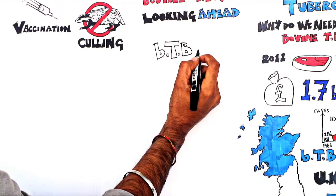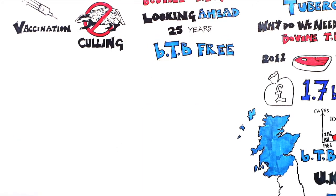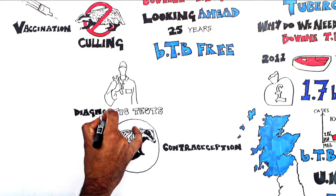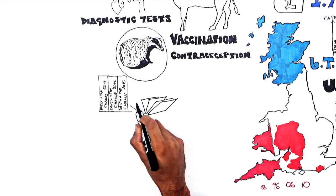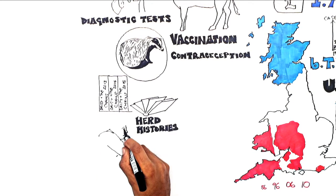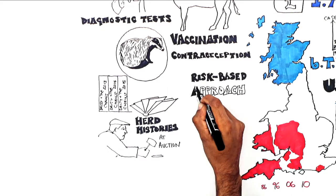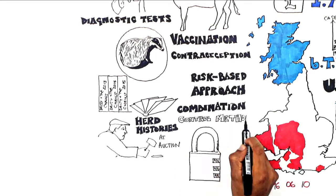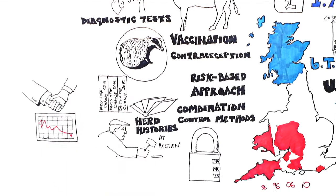Looking ahead, the government has recently consulted on a draft strategy for England to become bovine TB free in 25 years. This builds on existing measures and includes the following elements: developing newer methods for controlling the badger population, such as contraception, and better diagnostic tests and vaccines for badgers and cattle; allowing access to the bovine TB history of individual herds so that farmers can be better informed when buying cattle at auction; developing a better risk-based approach, calculating more accurately if and how infection might spread from certain areas and then choosing the most suitable combination of control methods; and reviewing the ways in which bovine TB controls are governed, delivered, and funded.